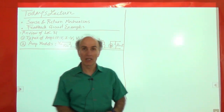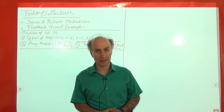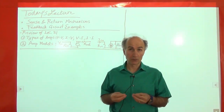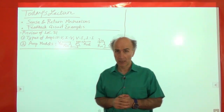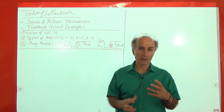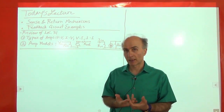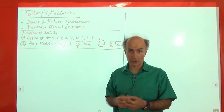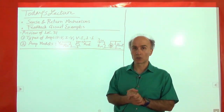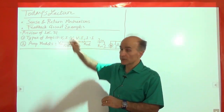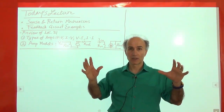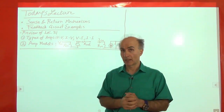This is lecture number 32. Today we will talk about two important concepts used in building a negative feedback circuit: the sense mechanism and the return mechanism. We will see how these mechanisms are implemented when sensing a voltage or a current and returning a voltage or a current, examining how the topologies show up.